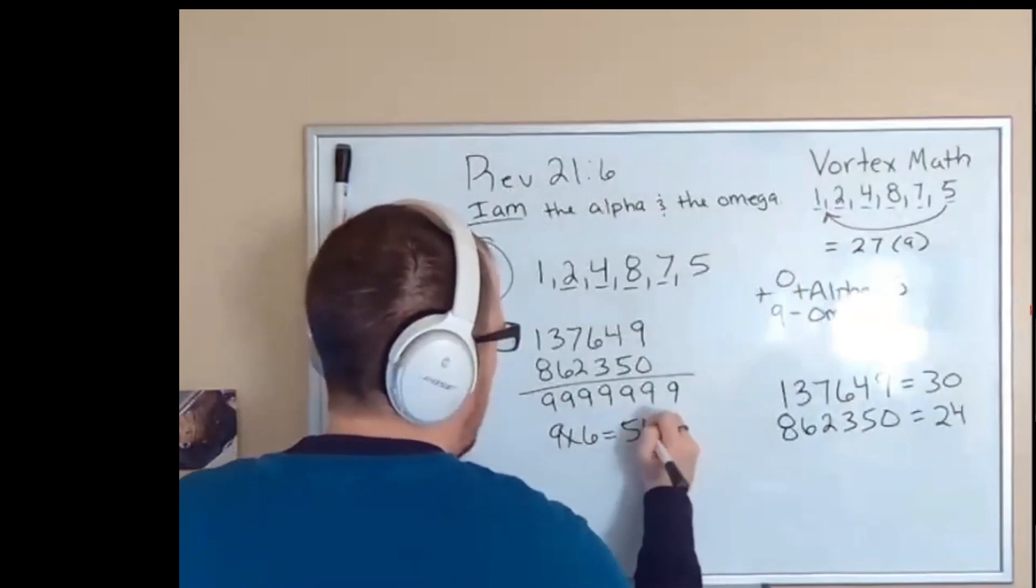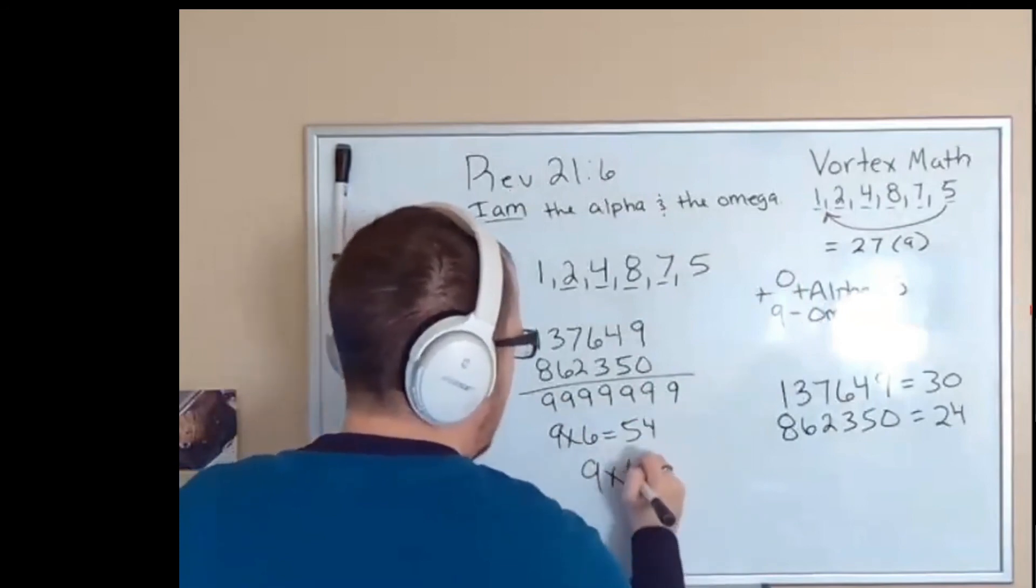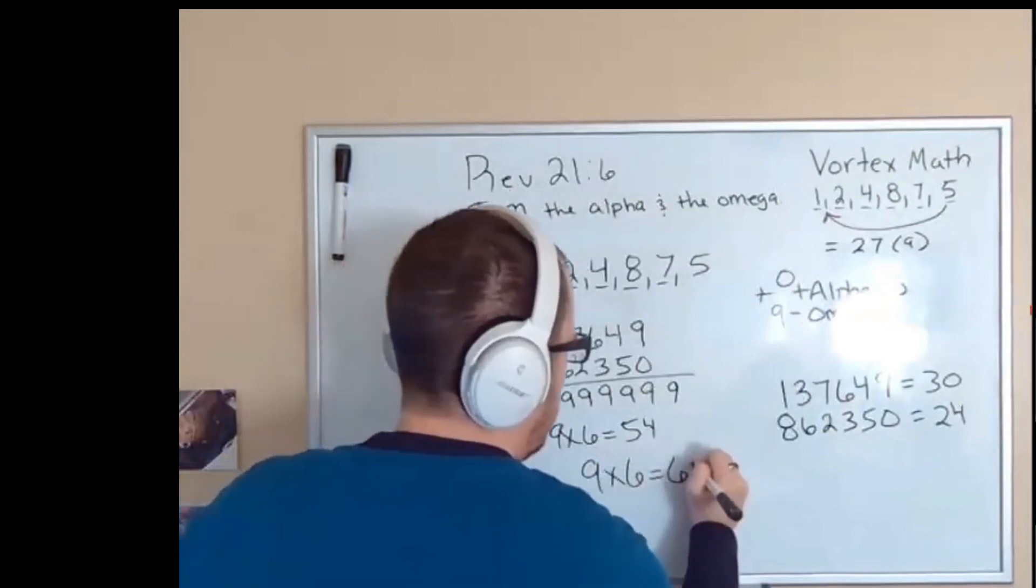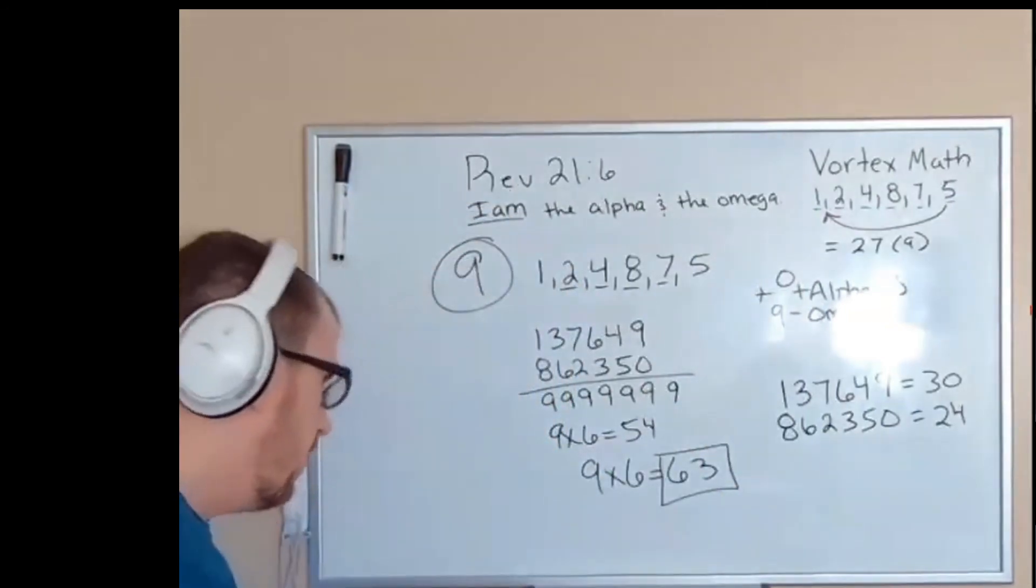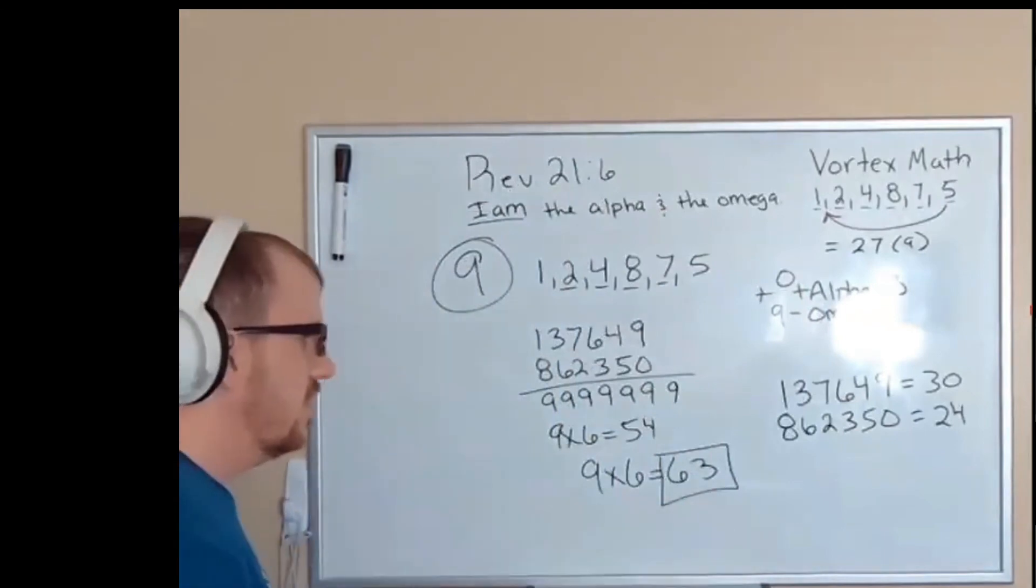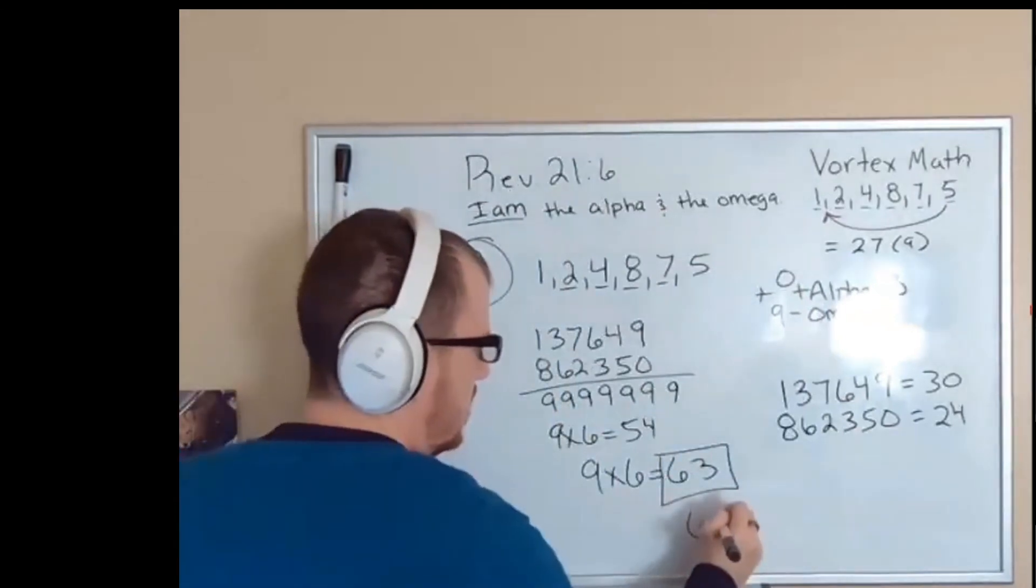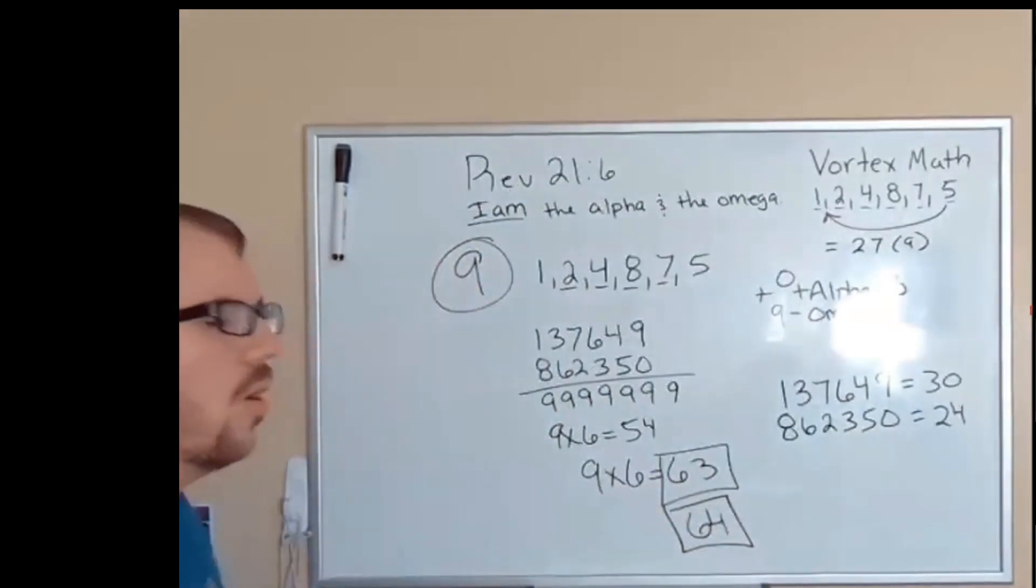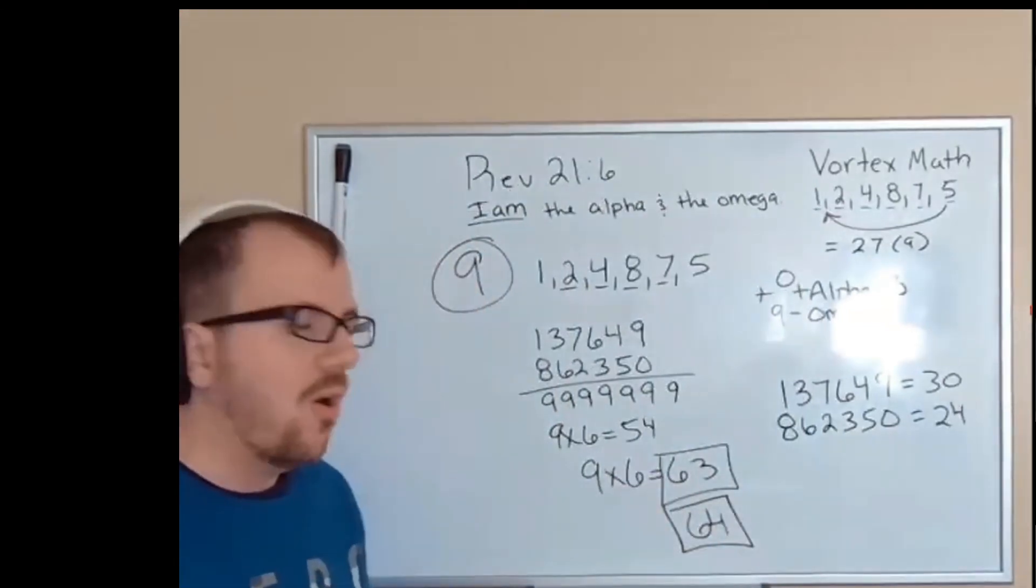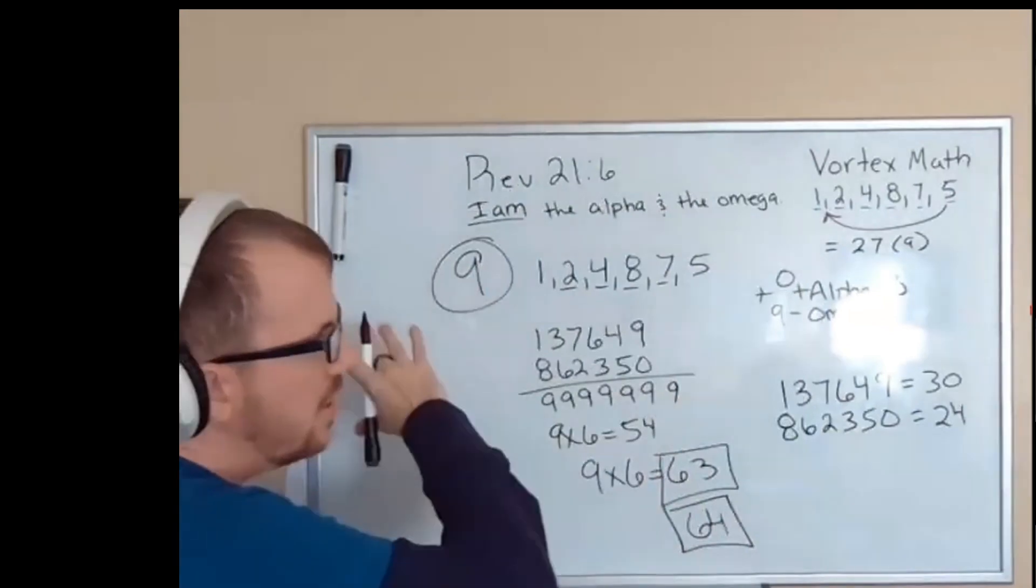So this is 54. Nine times six is 63. And anybody who has learned about the eye of Horus or the eye of Ra, the eye of Horus is going to be 63 and the eye of Ra is going to be 64. All of this goes together. All of it flows together. All of it works together.